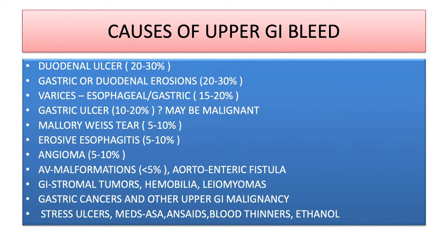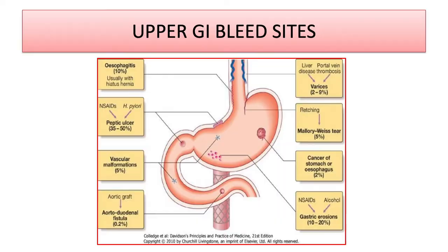GI stromal tumors are not common but can happen. Hemobilia can cause bleeding. Leiomyomas are very important — they are benign tumors of the stomach and can ulcerate and bleed, usually seen on upper GI endoscopy. Gastric cancers and other upper GI malignancies are less common but can present in older patients. Stress ulcers — related to aspirin use, NSAIDs, blood thinners, or alcohol — used to be very common and still exist. Important special stress ulcers: Cushing ulcer occurs with increased intracranial tension (board question), and Curling ulcer occurs with burn injuries. They can also occur from massive trauma related to the body's stress response.